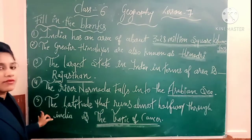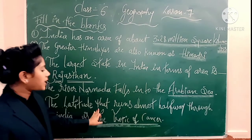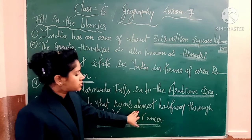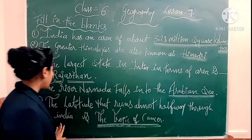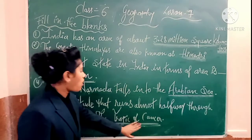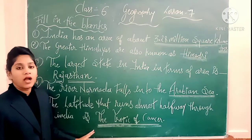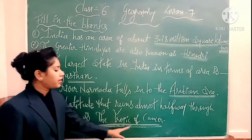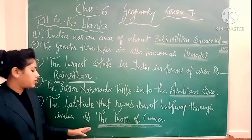Now fifth number, fill in the blanks. The latitude that runs almost halfway through India is the tropic of cancer. Ye rahega aapka answer: the tropic of cancer. This is your answer.